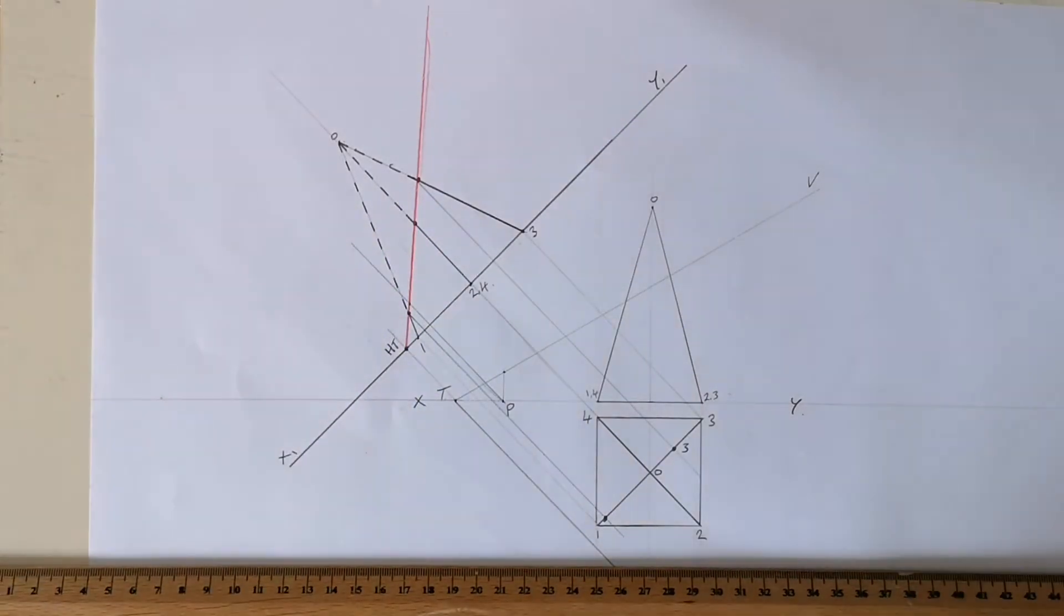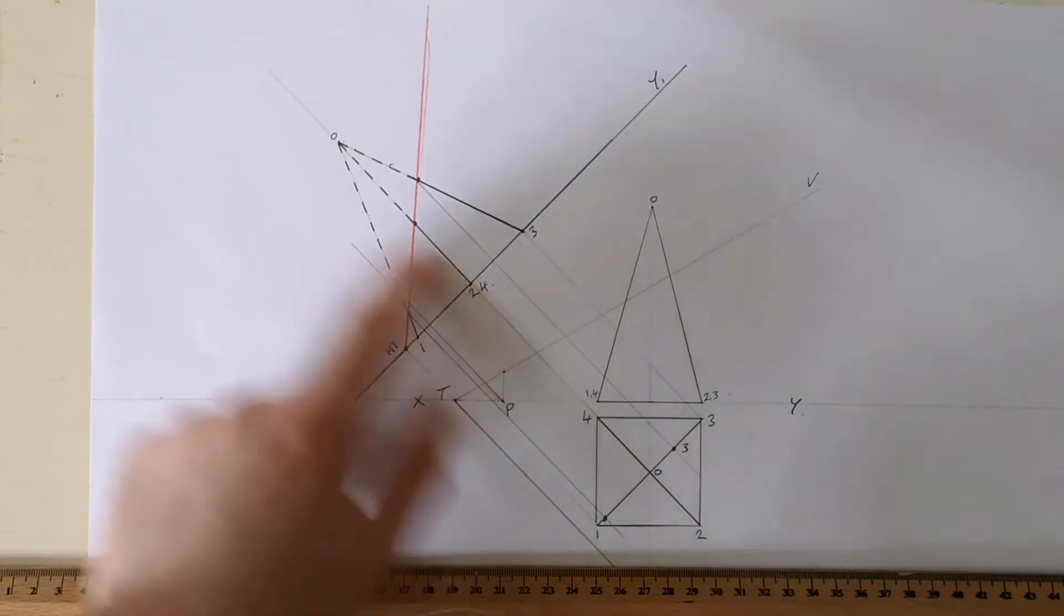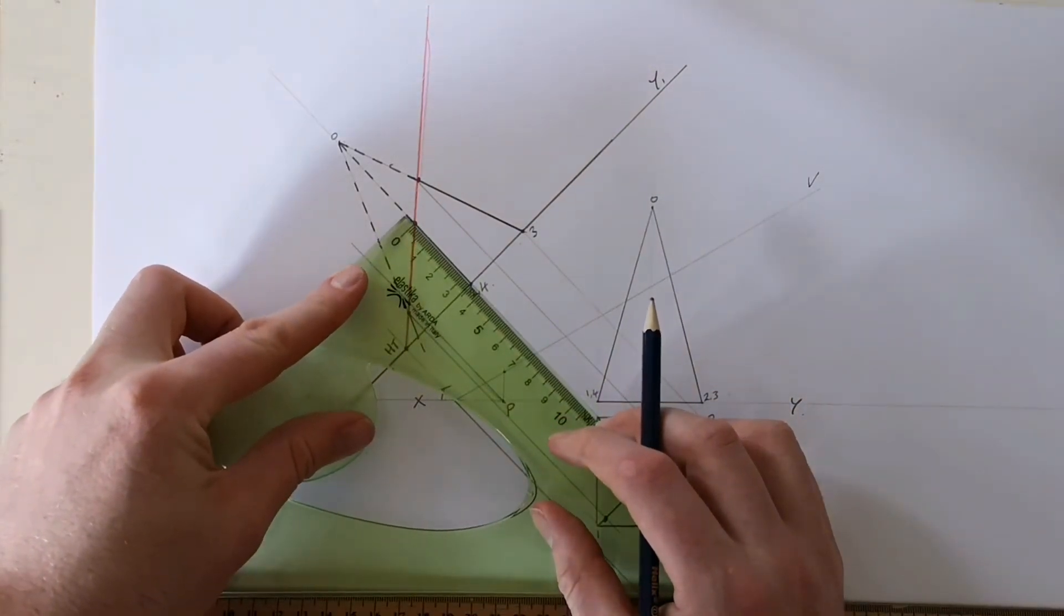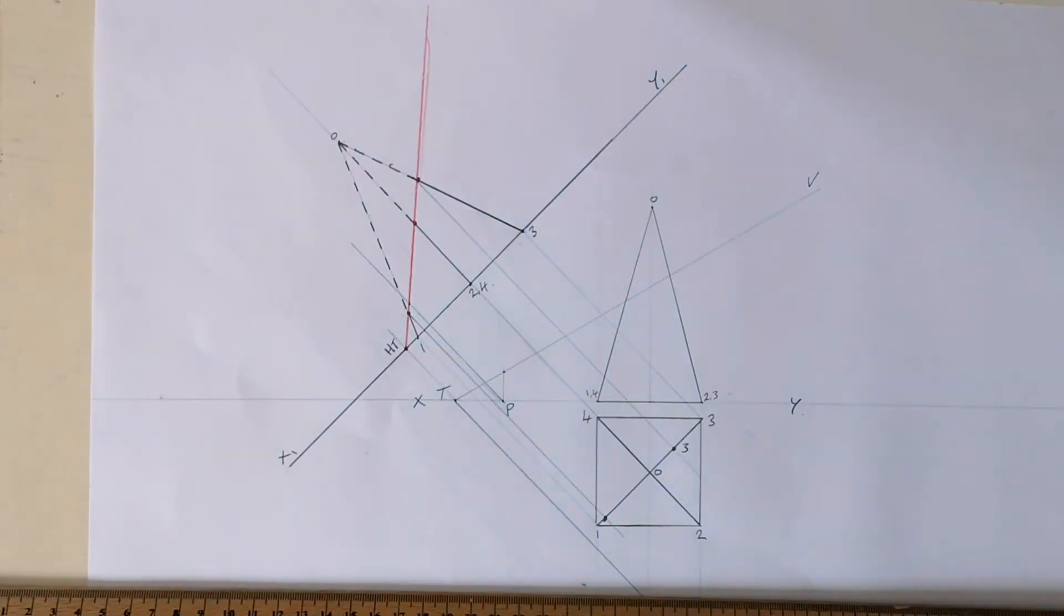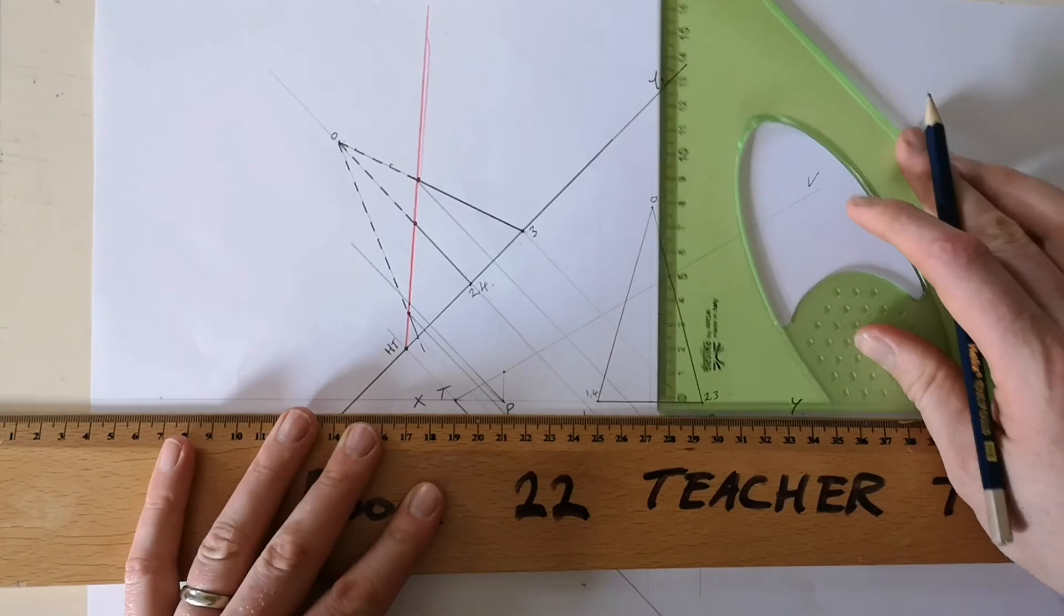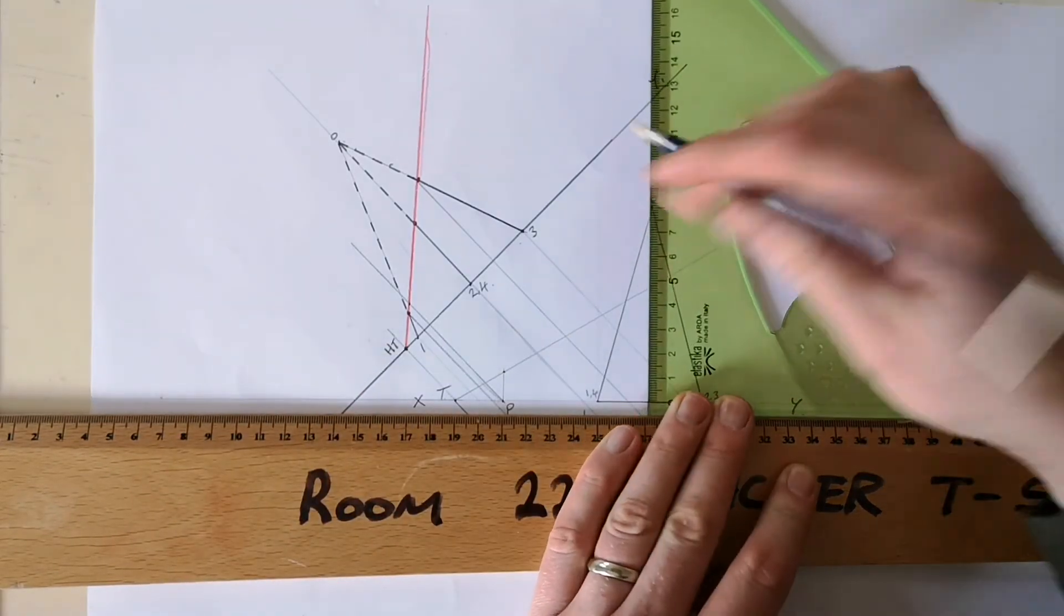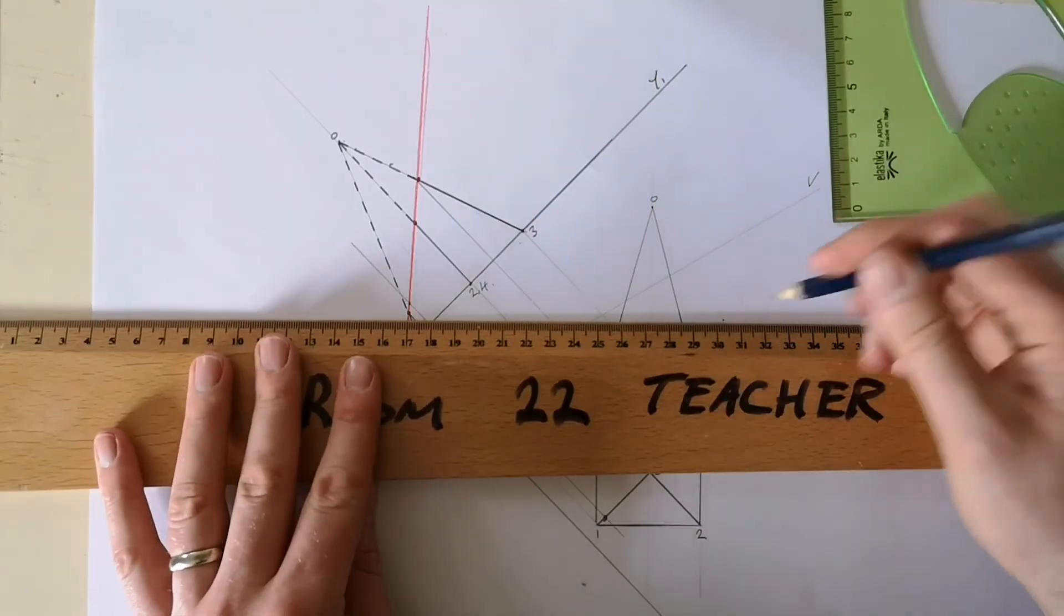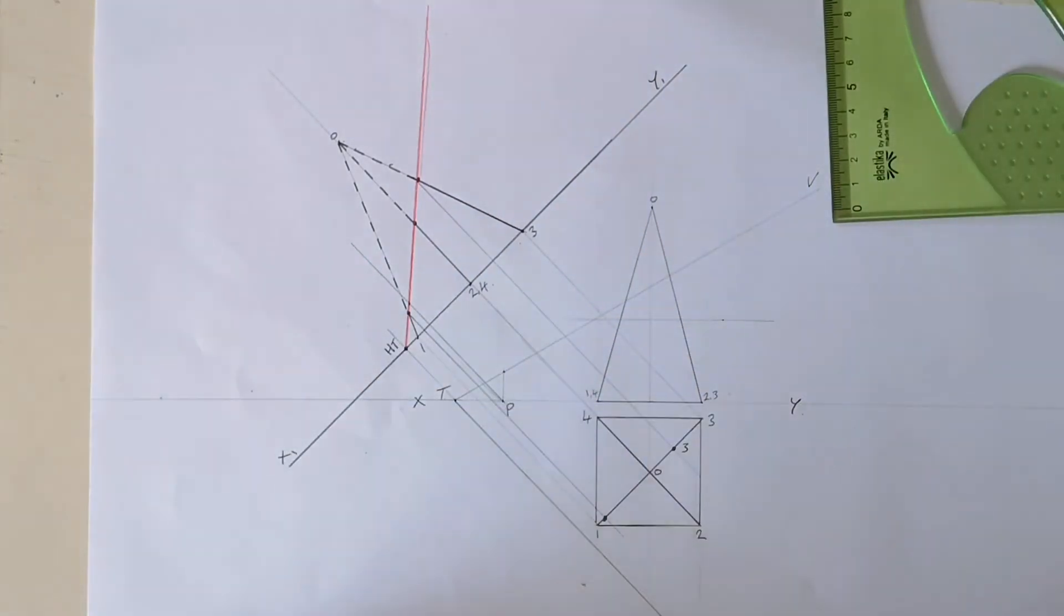So what I'm going to do is I'm going to measure the distance from the ground up to where the red line strikes two and four. And in my drawing here, that's 34 millimeters. So if I come up here, my elevation, mark 34 in a light line across there.